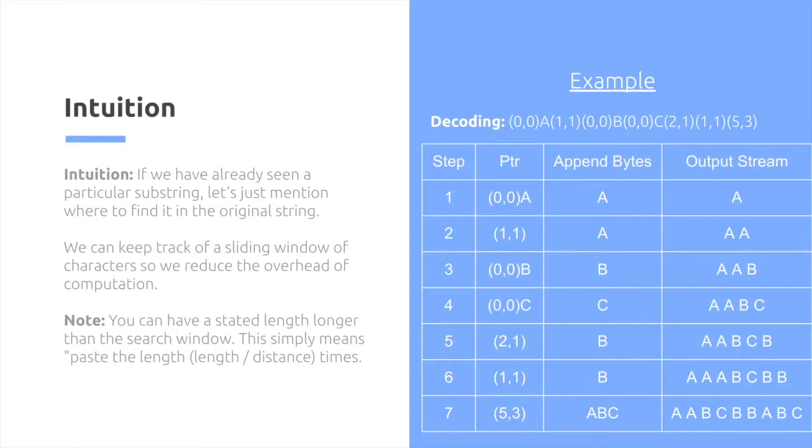And then afterwards, we get A, B, C, which is 5, 3, which again, we just simply put A, B, C.